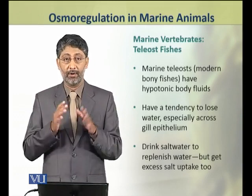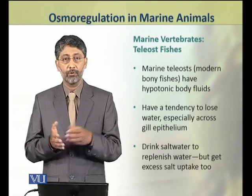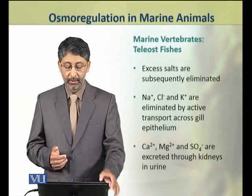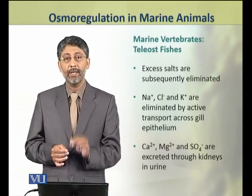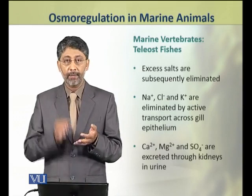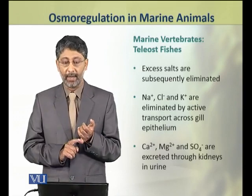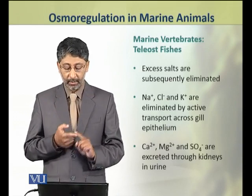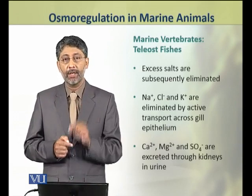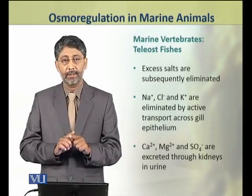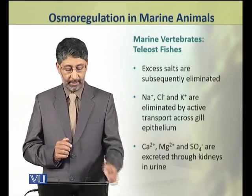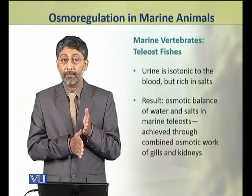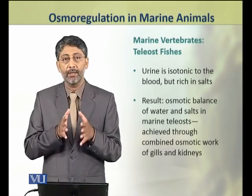To replenish this lost water, teleosts drink seawater. But seawater contains a lot of salts, so the body is flooded with excess salts, which they have to eliminate. Sodium, chloride, and potassium ions are eliminated by active transport through the gills, while calcium, magnesium, and sulfate ions are excreted through the kidneys in urine. Their urine is isotonic to blood but is rich in salts.